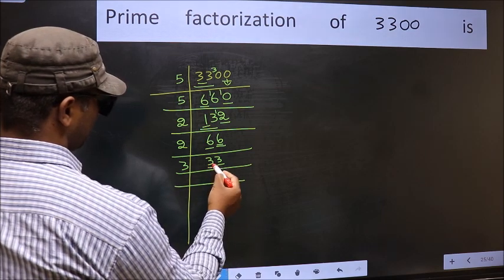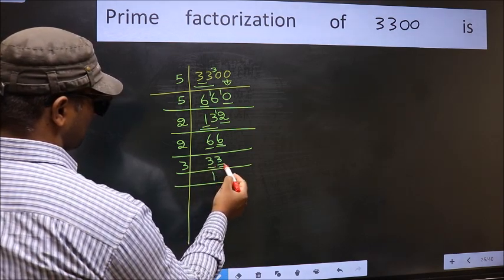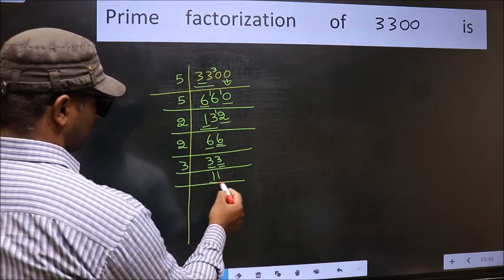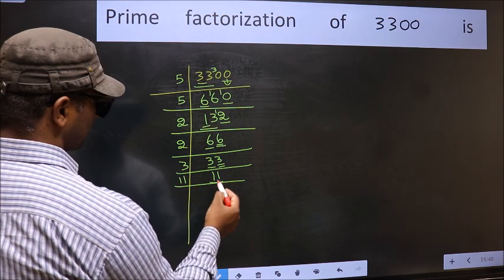First number 3, when do we get 3 in 3 table? 3 once 3. The other number 3, when do we get 3 in 3 table? 3 once 3. Now here we have 11, 11 is a prime number. So 11 once 11.